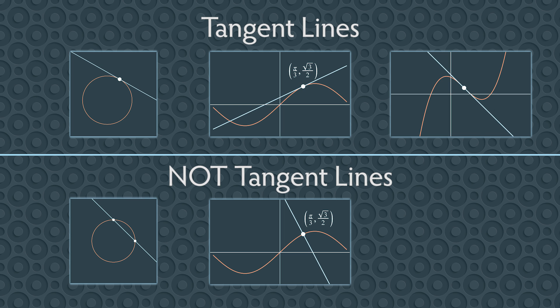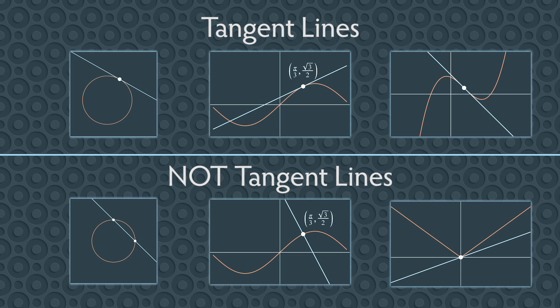Here's a tangent line that touches the cubic curve at only one point. Notice how part of the curve lies above the tangent line and part of the curve lies below it. And here, we have a line that touches the graph of y equals the absolute value of x only at the origin, but this is not a tangent line. So here we have six examples: three tangent lines and three non-tangent lines. From these six examples, how would you define a tangent line?